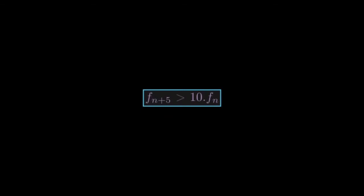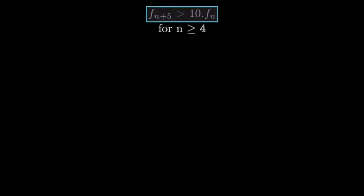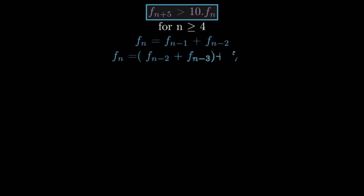In order to proceed further, we first need to prove the following result: f_{n+5} is greater than 10 f_n. You can observe that this is true for the first 3 Fibonacci numbers that is f_1, f_2 and f_3. For f_n where n is greater than 4, we have f_n equals f_{n-1} plus f_{n-2}. And we can break down f_{n-1} further to give us the following, hence ending up with this result.